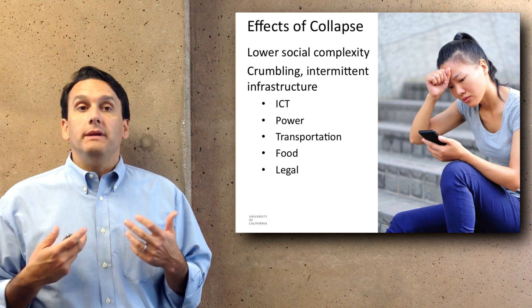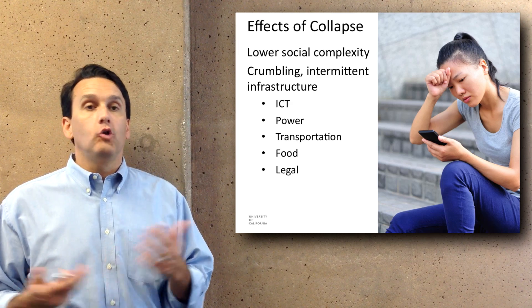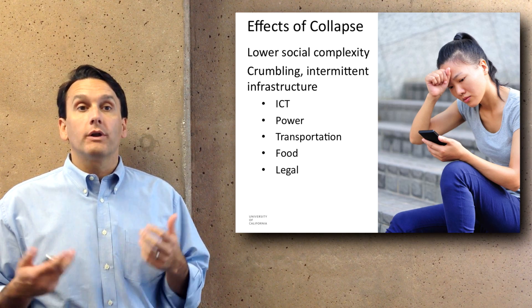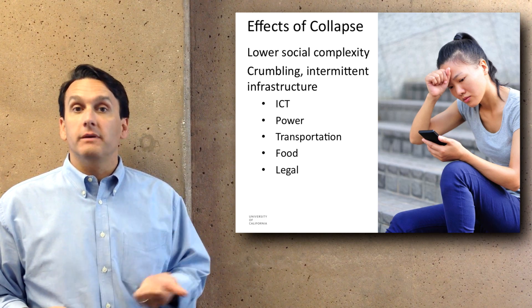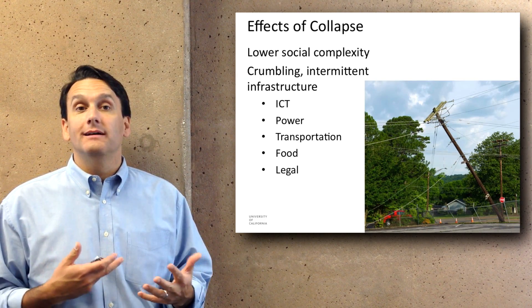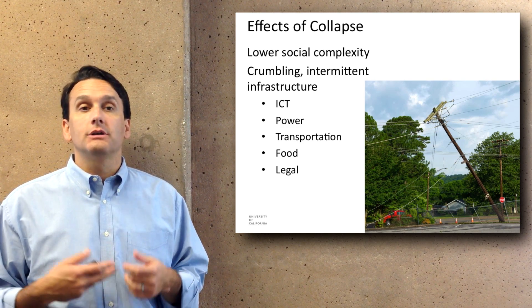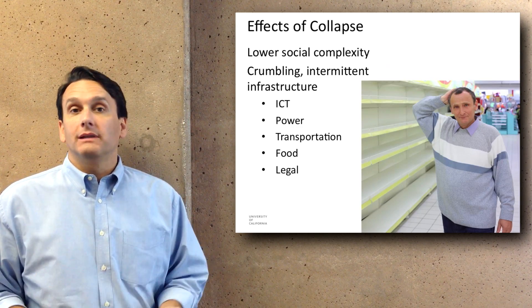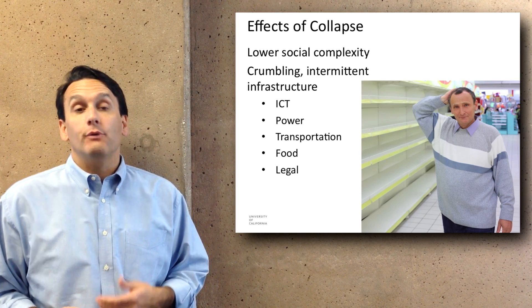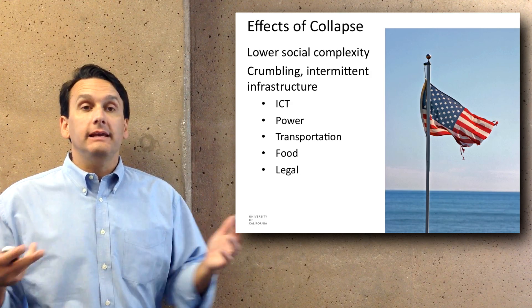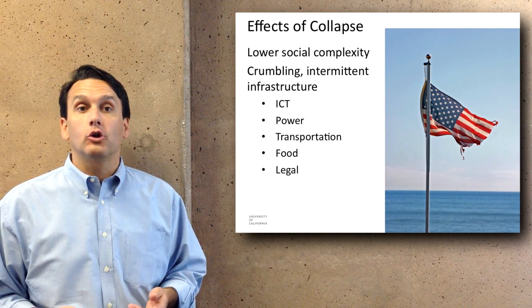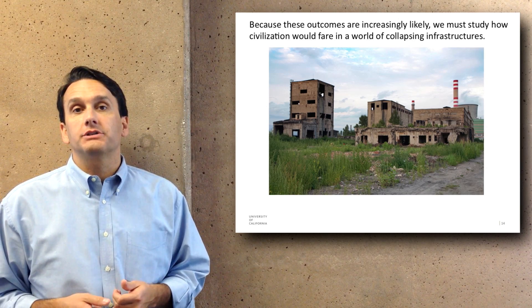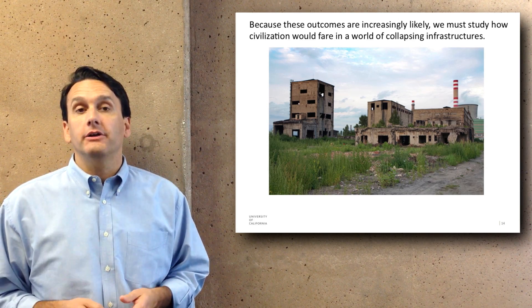The effects of collapse would include lower social complexity — rather than global civilization, the main unit of social cohesion would be significantly smaller. We'd also see crumbling, intermittent infrastructure: information and communication technologies would become less reliable, power would involve rolling blackouts and brownouts, roads would have potholes and maintenance wouldn't happen, food would become less available, and the legal system would become more of a local phenomenon than a national or global one. This growing likelihood of these outcomes is why we think it's an important area of research to study the civilizational changes accompanying a failure to achieve sustainability.